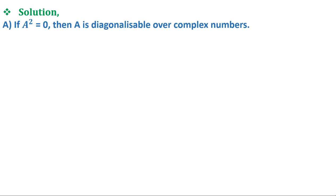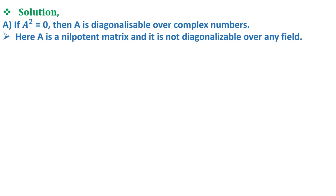Solution. Option A says if A² = 0, then A is diagonalizable over complex numbers. Here A is clearly a nilpotent matrix and therefore it is not diagonalizable over any field. Option B says if A² = I, then A is diagonalizable over real numbers.